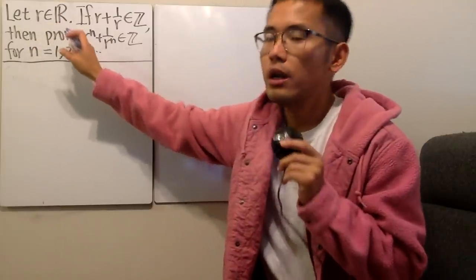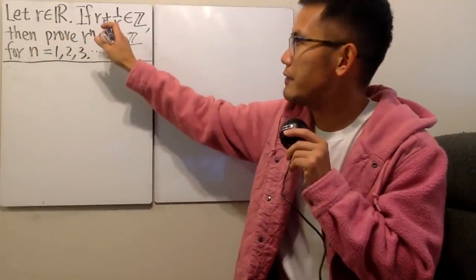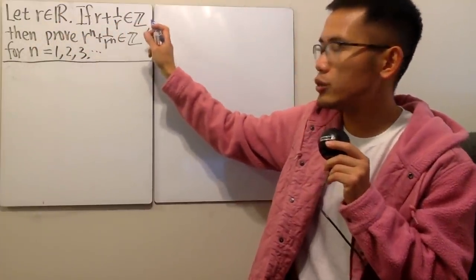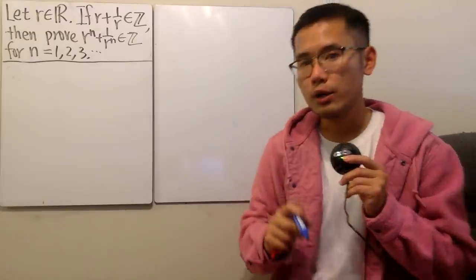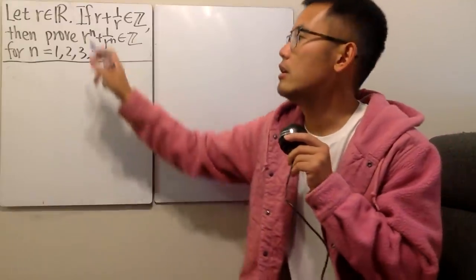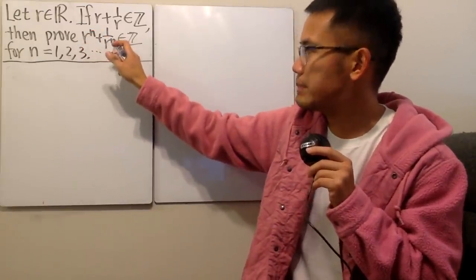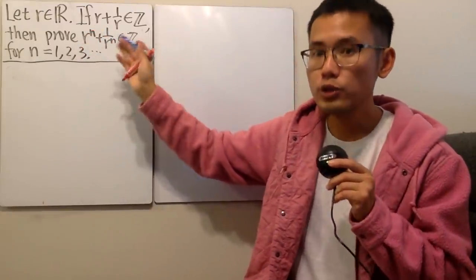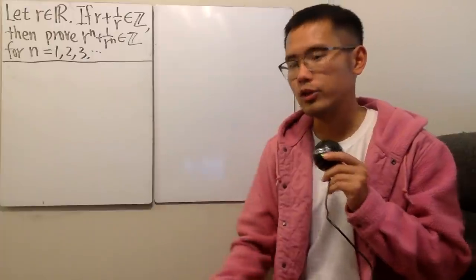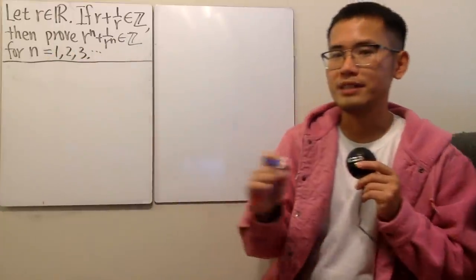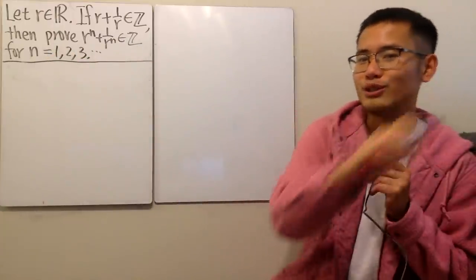Let r be a real number, and if we have r plus 1 over r being an integer, then we are going to show that r to the nth power plus 1 over r to the nth power also has to be an integer for n equal to 1, 2, 3, 4, 5, 6, 7, 8, and so on.